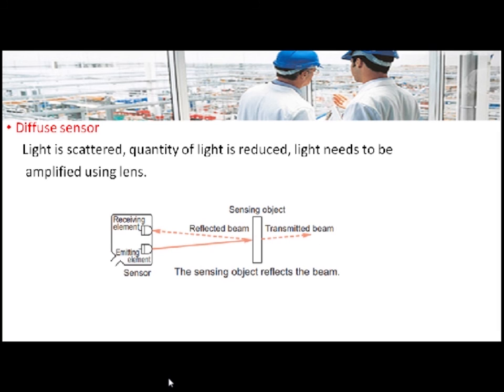The next type is diffuse type optical sensor. It consists of a single module that houses both the receiver and source element. It does not use any reflector; the object itself acts as a reflector, and the minimum light reflected by the sensing object is sufficient for detecting it.